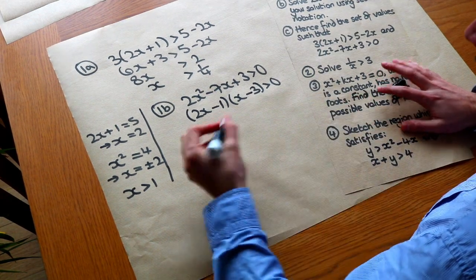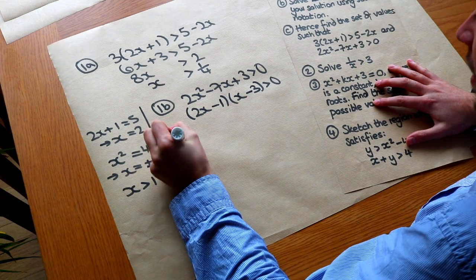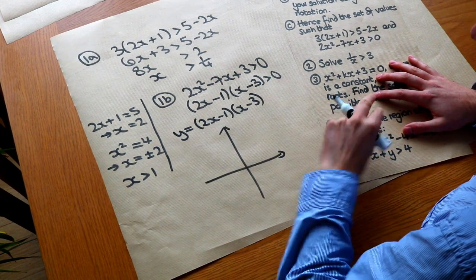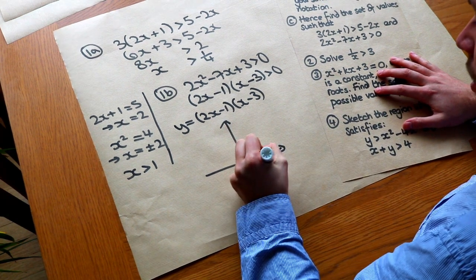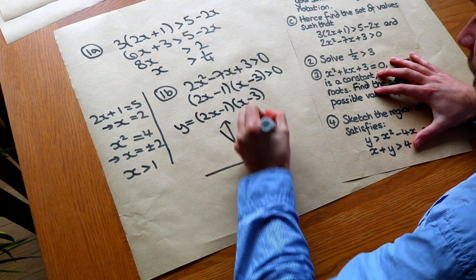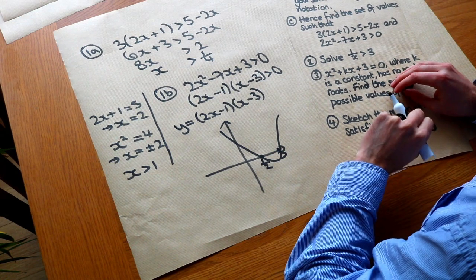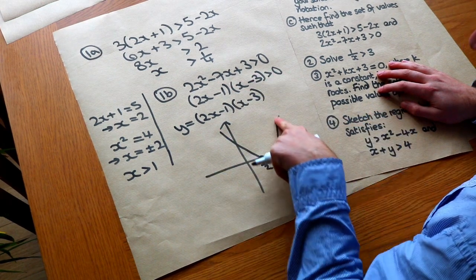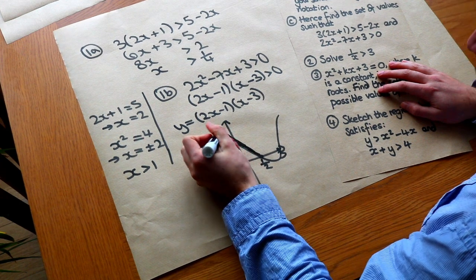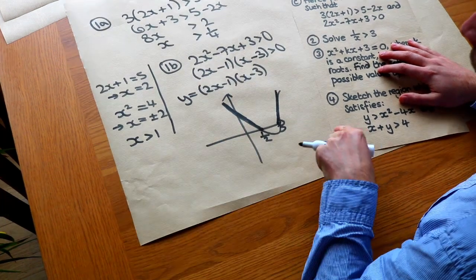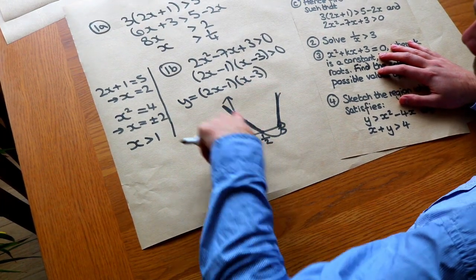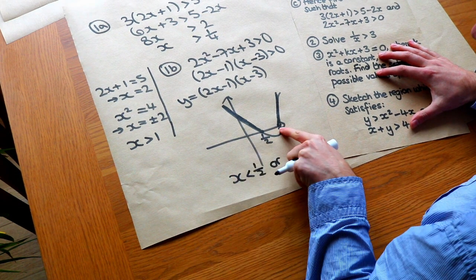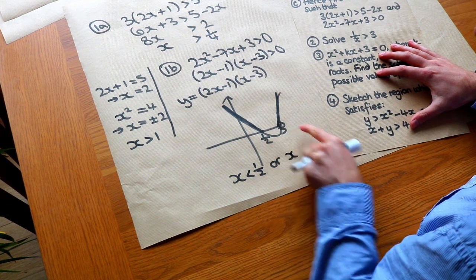From here we'll use the sketch technique. We sketch y = (2x − 1)(x − 3). It has two roots - x-intercepts at x = 1/2 and x = 3 - and as a positive quadratic it's U-shaped. We're looking where y is greater than 0. The y value is above 0 in two regions: where x is less than 1/2, and where x is greater than 3.